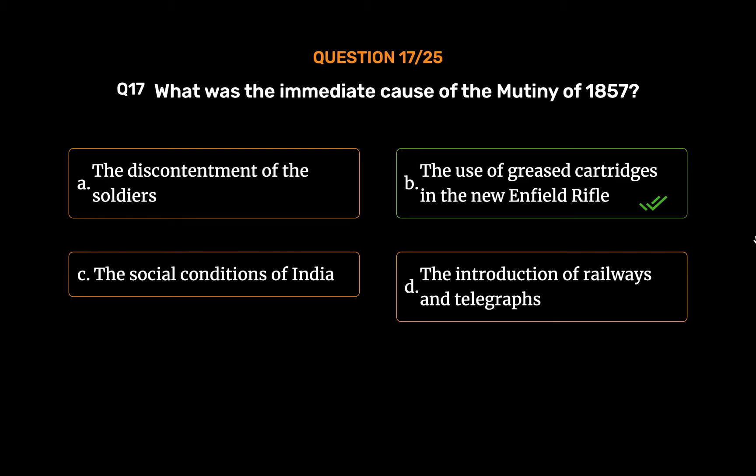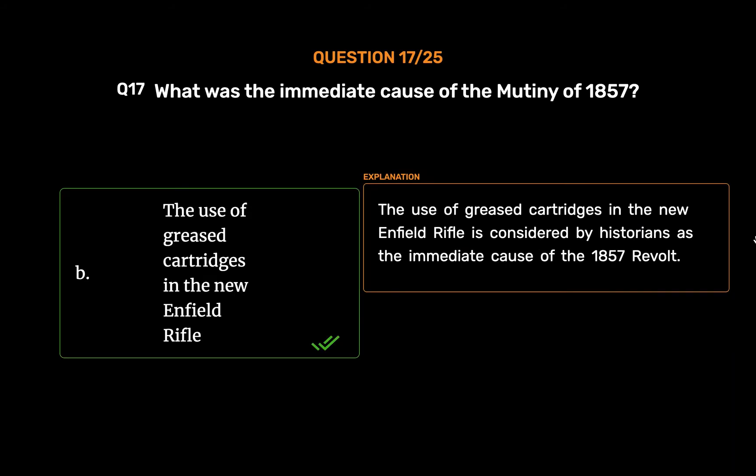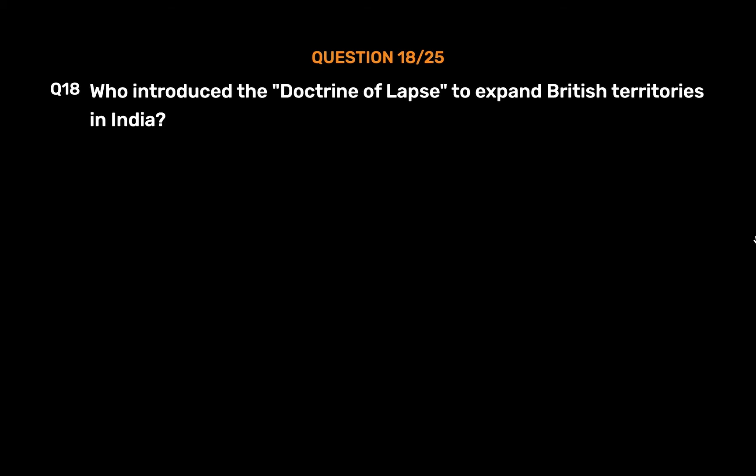The correct answer is Option B: The use of greased cartridges in the new Enfield rifle. The use of greased cartridges in the new Enfield rifle is considered by historians as the immediate cause of the 1857 revolt.